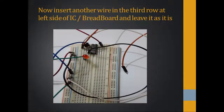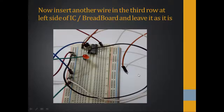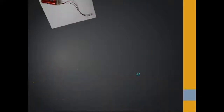Now insert another wire in the third row at the left side of the IC on the breadboard and leave the other end unconnected. This third wire will basically indicate the output. Connect it in the third row but do not connect it anywhere else — that side should be left as it is.